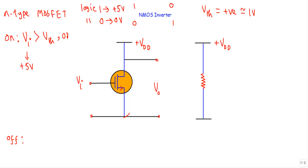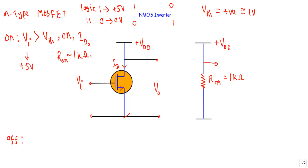Therefore, the MOSFET will be in ON state. When the MOSFET is in ON state, we will get drain-to-source current ID. The channel will provide a low resistance path; the ON state resistance will be around 1 kilo-ohm. So if I apply VI greater than VTH, the MOSFET will be in ON state, I will get drain current ID, and the ON state channel resistance will be around 1 kilo-ohm. Applying logic 1 (5V) puts the MOSFET in ON state, providing a low resistance path for current flow.